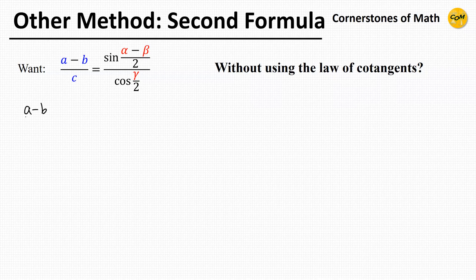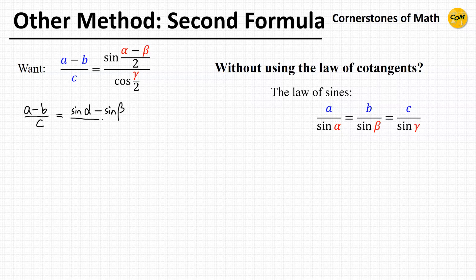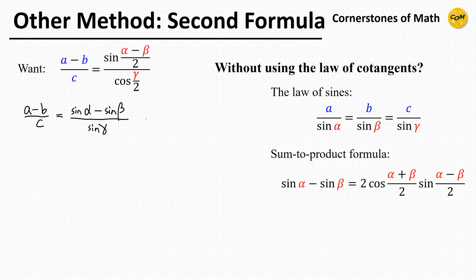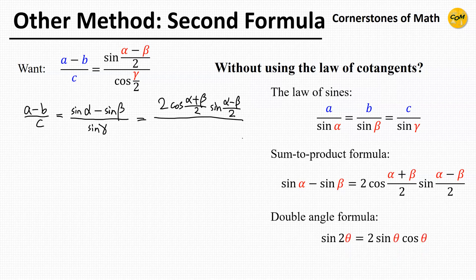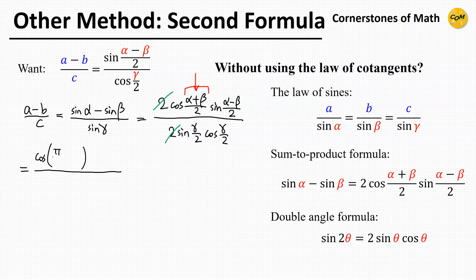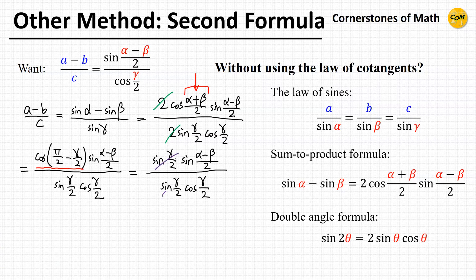Similarly, for the second formula, we use the law of sines to get (sine alpha minus sine beta) divided by sine gamma. Applying the sum-to-product formula gives 2 cosine((alpha plus beta)/2) sine((alpha minus beta)/2) in the numerator, and using the double-angle formula gives 2 sine(gamma/2) cosine(gamma/2) in the denominator. Writing (alpha plus beta)/2 as pi/2 minus gamma/2, this part becomes sine(gamma/2). Cancelling out, we obtain sine((alpha minus beta)/2) divided by cosine(gamma/2), which is the right-hand side of the formula.